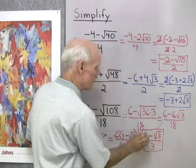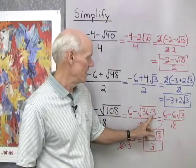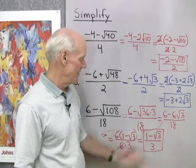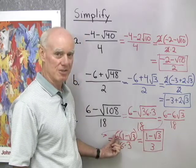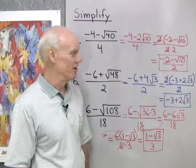So same process again, I showed one extra step here, where I showed the 108 is 36 times 3, then I took the square root of 36 outside as 6, square root 3, and then factored out that greatest common factor, 6, from the numerator, and then divided out those common factors in the numerator and denominator.